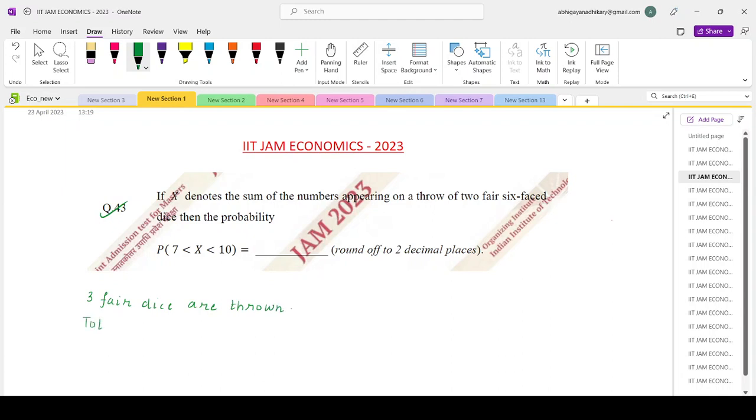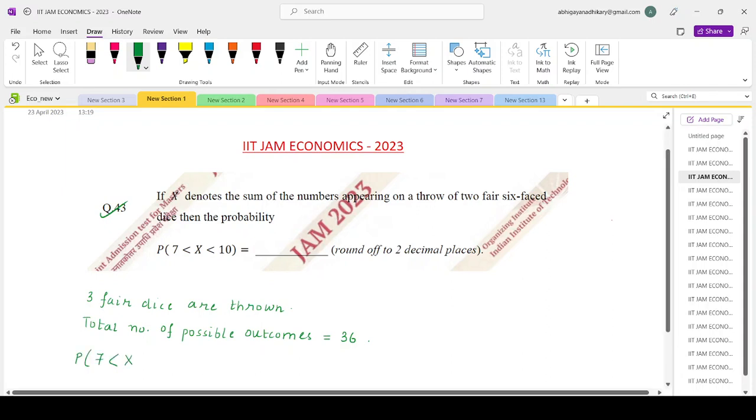What is the total number of possible outcomes? It is 6×6 = 36. We need to find the probability that X lies between 7 and 10, so that is basically probability that X equals 8 or probability that X equals 9.